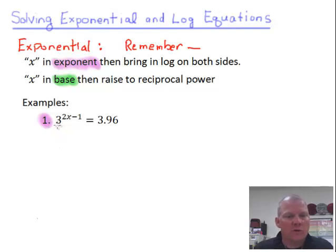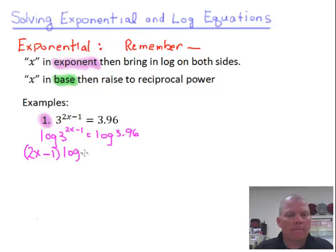So here we get going. Let's start then. With this first one, since the x is in the exponent, we're going to bring in the log on both sides. So let's bring in the log. So we'll write log 3 to the 2x minus 1 equals log of 3.96.